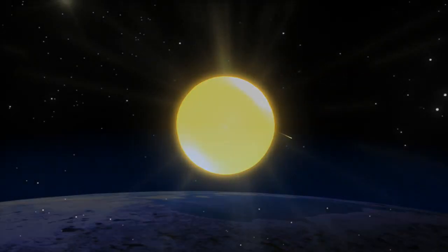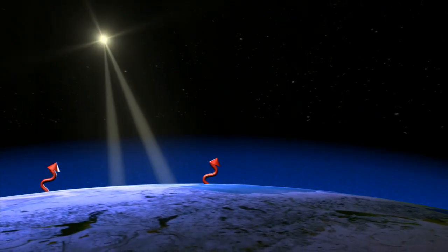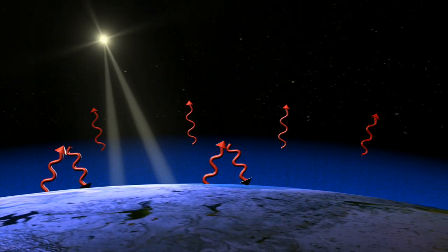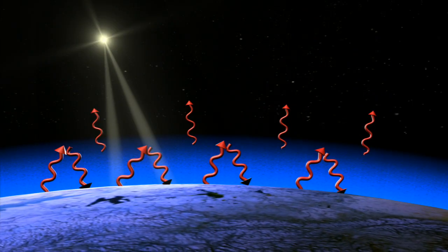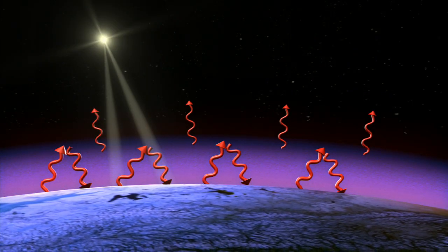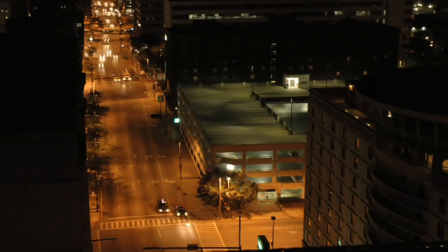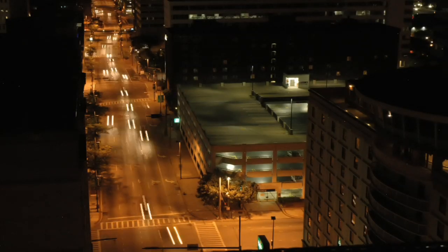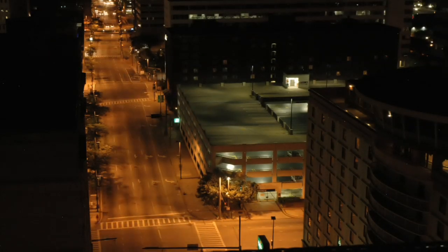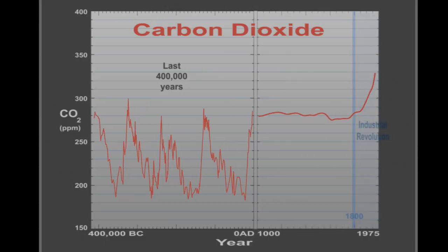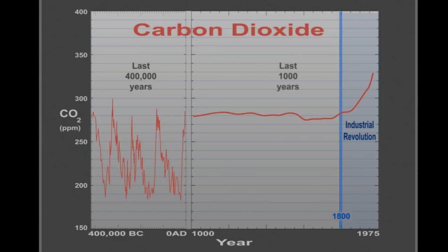At the most basic level, the balance between incoming sunlight and outgoing heat determines the Earth's climate. Greenhouse gases act like a blanket and trap heat in the atmosphere. Carbon dioxide is a greenhouse gas. In the past two centuries, humans have increased atmospheric carbon dioxide by more than 30% by burning fossil fuels and cutting down forests. The Earth has not experienced carbon dioxide levels this high for the past several million years.